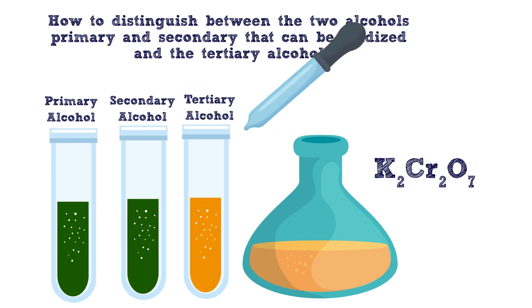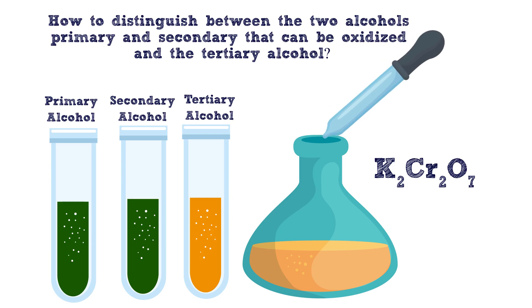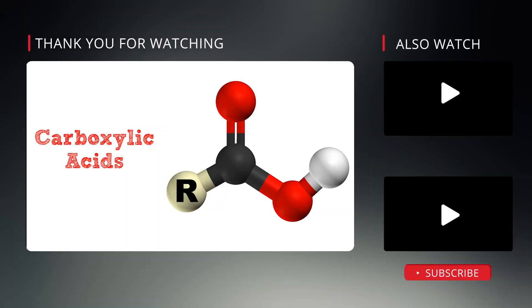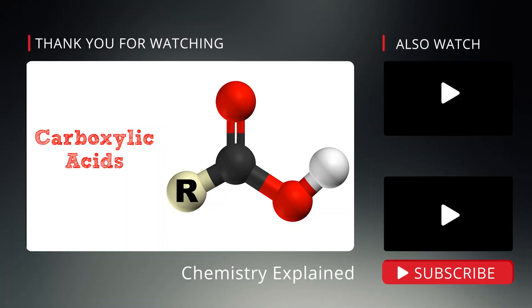No change of the color of the potassium dichromate will be observed for tertiary alcohols. In our next video, we will talk about carboxylic acids.